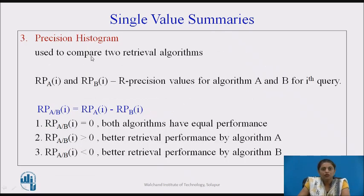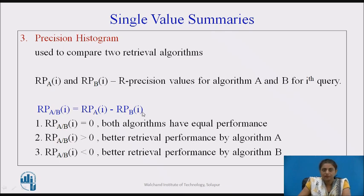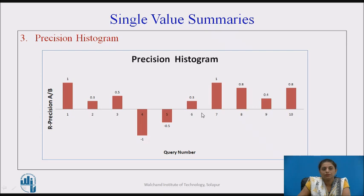The third method is the precision histogram, used to compare retrieval performance of two algorithms. We find the difference between the R-precision of algorithm A (RPA) and algorithm B (RPB) for each query. If the difference is 0, both algorithms have equal performance. If the difference is positive, algorithm A is better; if negative, algorithm B is better. Looking at a histogram over 10 queries, query numbers 4 and 5 have negative differences, meaning algorithm B performs better for those queries, while algorithm A performs better for the rest.